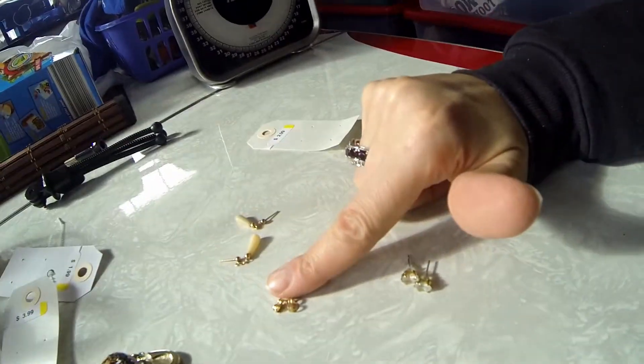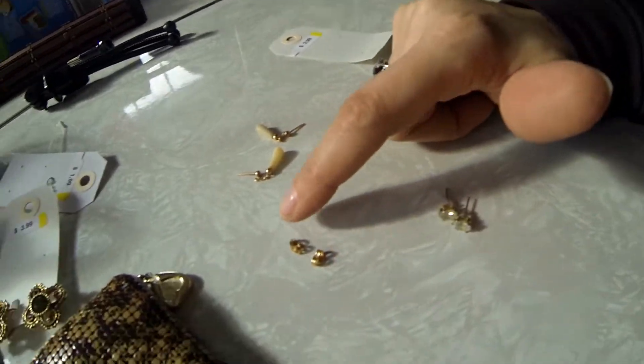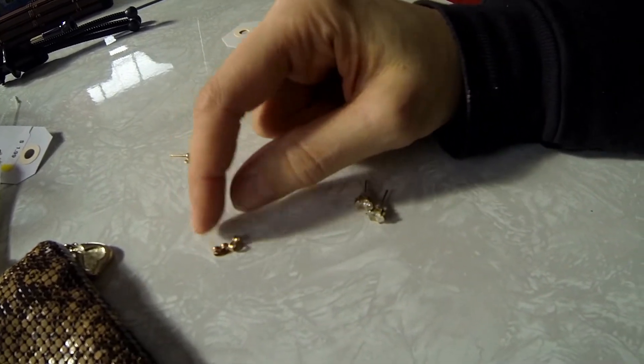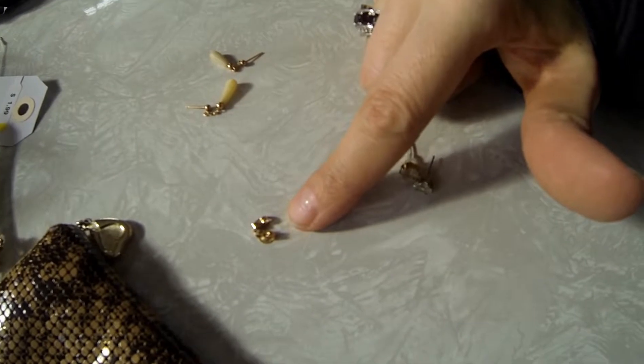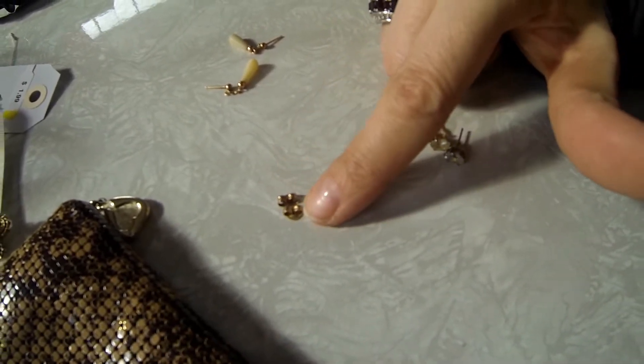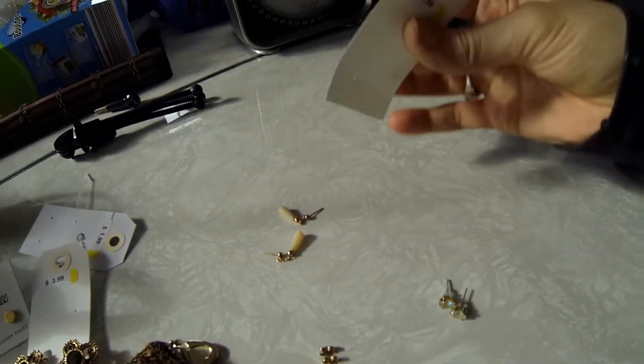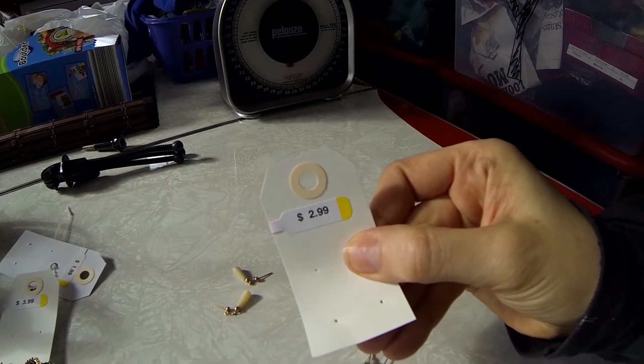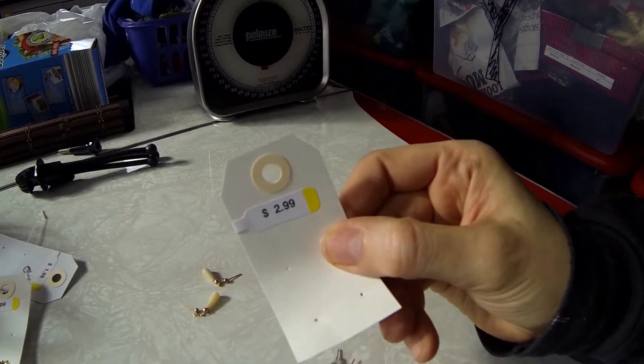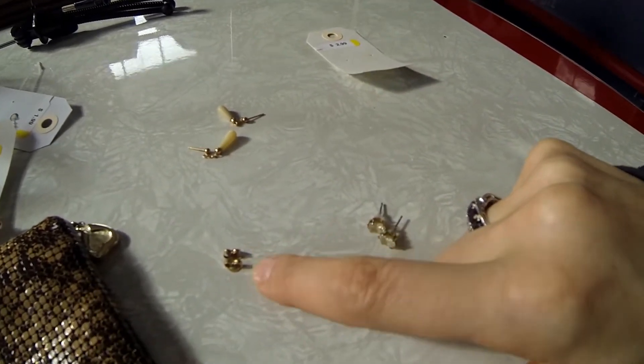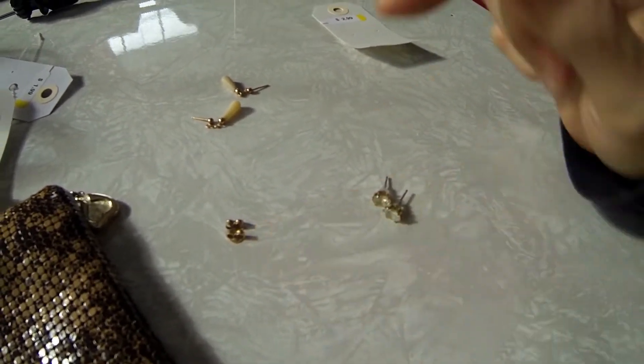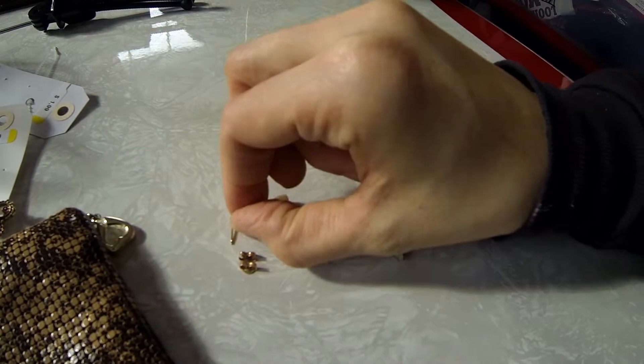Okay. So these earring backs, right here, these little goldy ones, they are marked 14 karat. So I did find 14 karat gold for only $1.50. I'm so happy about that. That is amazing. Now, it is a small amount. But hey, it's gold.